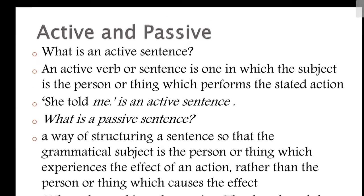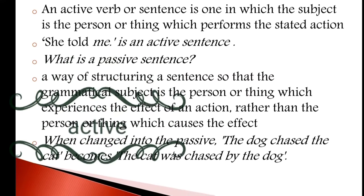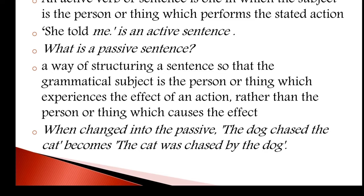So what is an active sentence? An active verb or sentence is one in which the subject is the person or thing which performs the stated action — like 'She told me.' What is a passive sentence? It's a way of structuring a sentence so that the grammatical subject is the person or thing which experiences the effect of an action, rather than the one that causes it. For example: 'The dog chased the cat' becomes 'The cat was chased by the dog.'